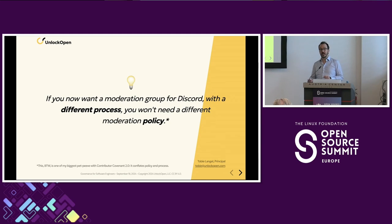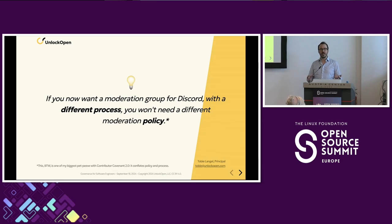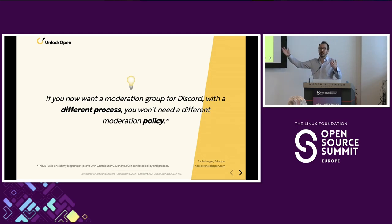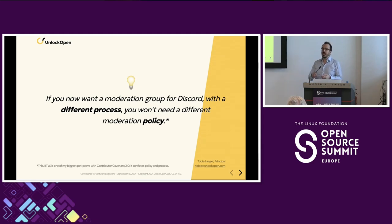What's really nice about working that way is if you want to have something for Discord, you're not dealing with the problem that your code of conduct isn't a good fit because Discord is different than GitHub. The benefit is you can have one policy and then multiple specific processes relevant to specific cases.